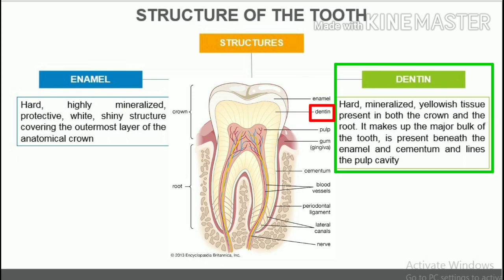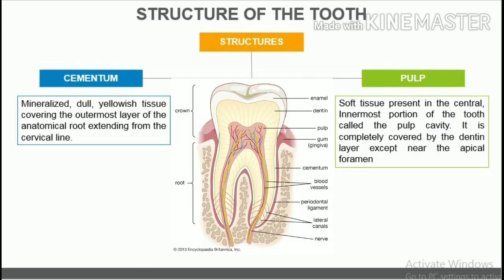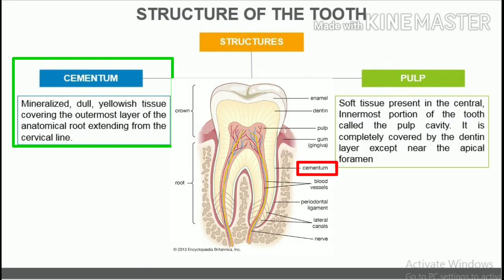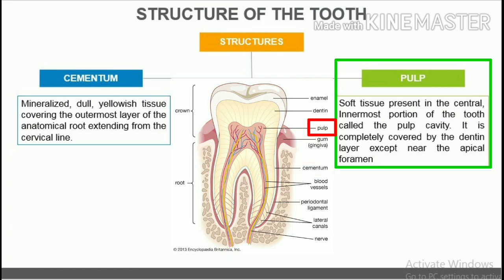Dentin is the hard, mineralized, yellowish tissue present in both the crown and the root. It makes up the major bulk of the tooth, is present beneath the enamel and cementum, and lines the pulp cavity. Cementum is the mineralized, dull, yellowish tissue covering the outermost layer of the anatomical root, extending from the cervical line. Pulp is the soft tissue present in the central, innermost portion of the tooth called the pulp cavity, completely covered by the dentin layer except near the apical foramen.